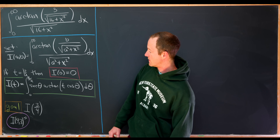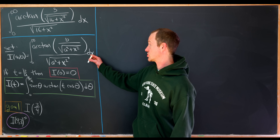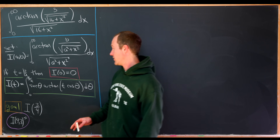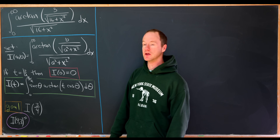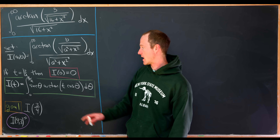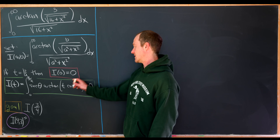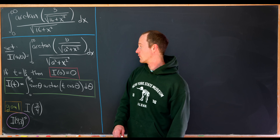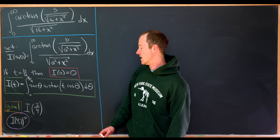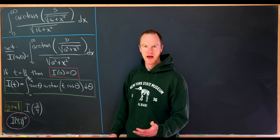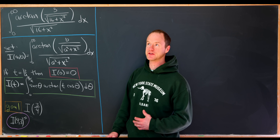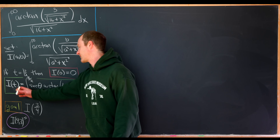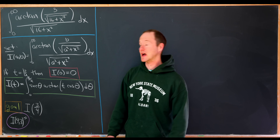In the last section we determined that our two-parameter integral I(a,b) was actually only a one-parameter integral under the substitution t equals b over a. So I(t) is the integral from 0 to pi over 2 of secant theta times arctan of t times cosine theta d theta, which means our goal is I evaluated at 3 over 4. Now let's take advantage of Feynman's trick, which essentially builds a differential equation for our function I(t).